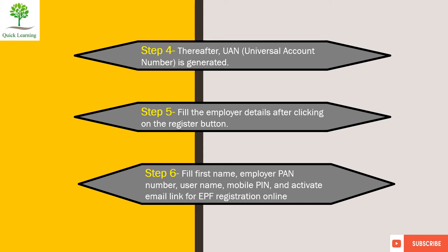You will need to fill in the domain name in the search field, then specify the account details. Fill in the hint question and answer, capture code, and mobile number. An OTP will be sent which you will enter at registration time. You will need to click on 'I agree to above declaration'. The last step is to activate the email link sent at registration time — click on that link to activate.